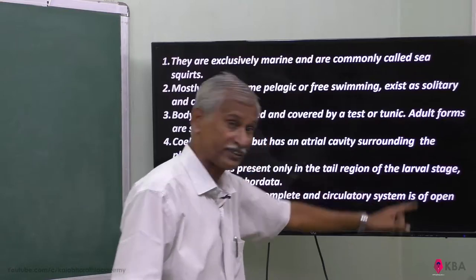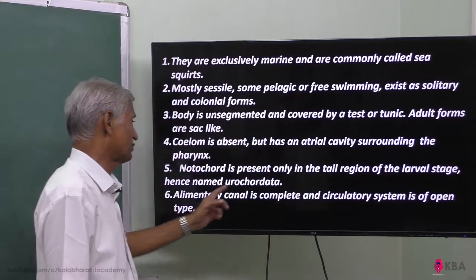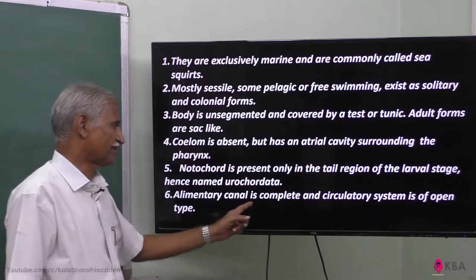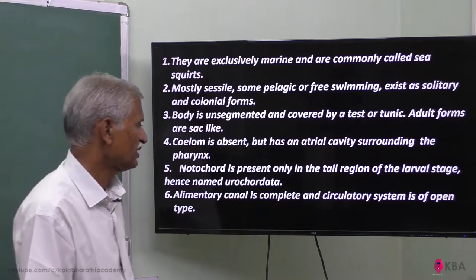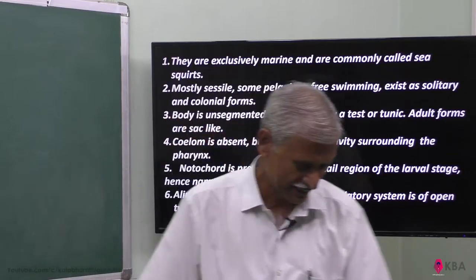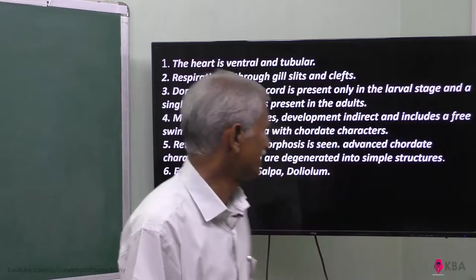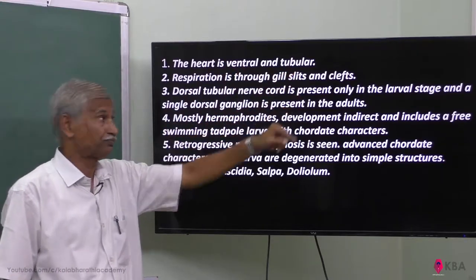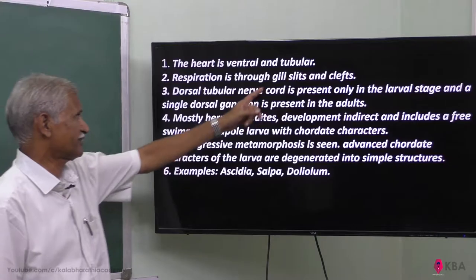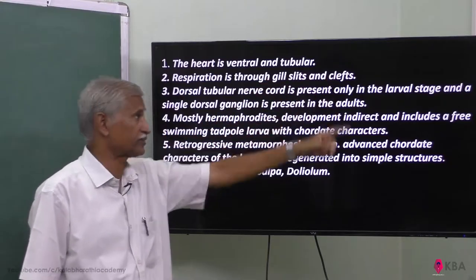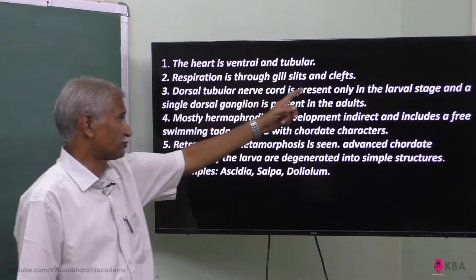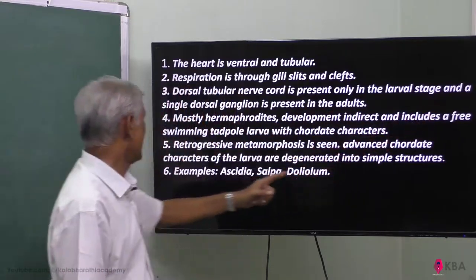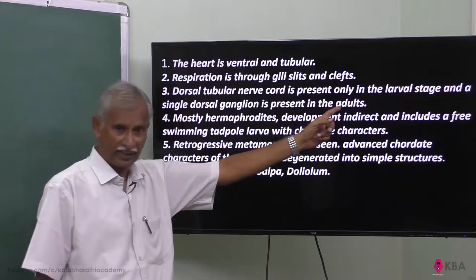Because notochord is only at the tail region in the larval stage, it is hence named Urochordata — 'uro' means tail end. The alimentary canal is complete. The circulatory system is of open type. The heart is on the ventral side and is tubular.